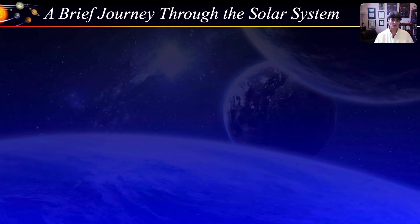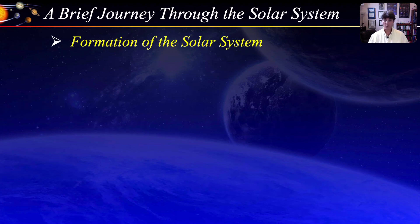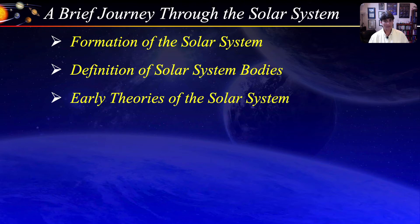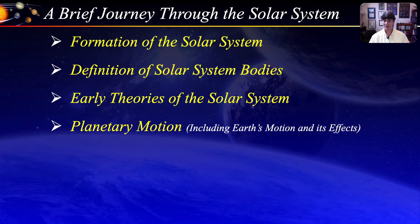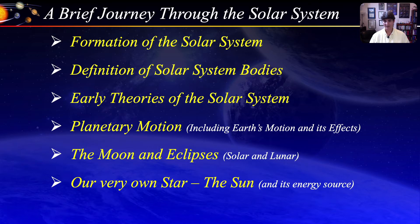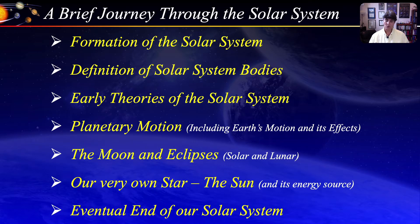Let's see what we will cover as we journey through our solar system. We start with the formation of the solar system — when and how it formed. We will define the various bodies within the solar system, then go over a brief historical perspective of the study of our solar system. We will then talk about planetary motion about the sun, and spend a little bit of time on Earth's motion and its effects. The next topic will be our closest neighbor, the Moon, and briefly mention eclipses, both solar and lunar. Then we take a look at our very own star, the Sun, the dominant object in our solar system. The Sun and our solar system will not last forever, so we will take a look at its eventual end.